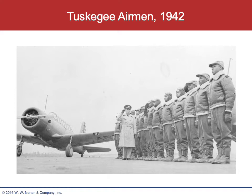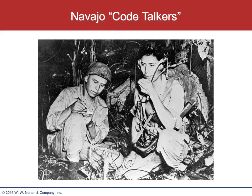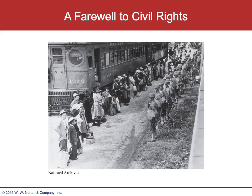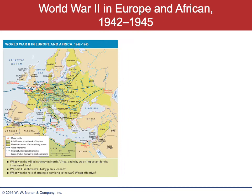Here are the Tuskegee Airmen. These men had the distinction of not losing a plane — they weren't bombers, they were protecting the bombers. They became a very highly decorated group of men. Here we have a photograph of the Native American Code Talkers at the Battle of Bougainville in 1943. And here is the lineup. To me, this picture of Japanese internment is everything you need to see — those soldiers facing these American citizens, when really they should have been turned around protecting them, is an embarrassment.